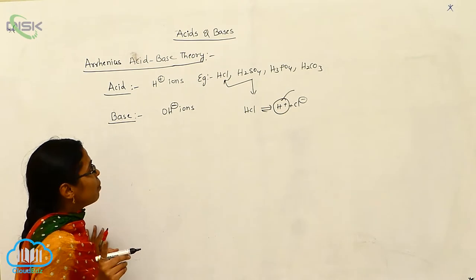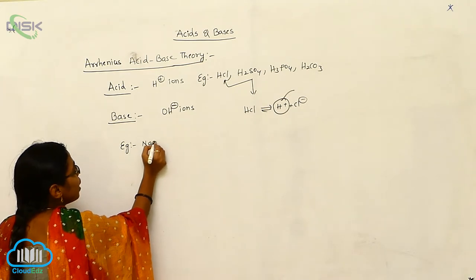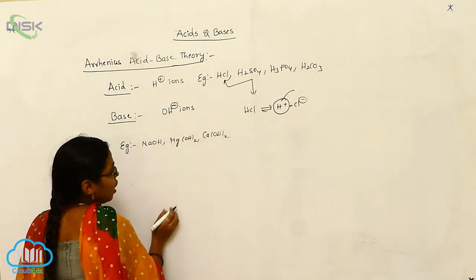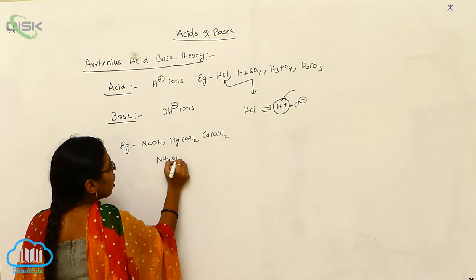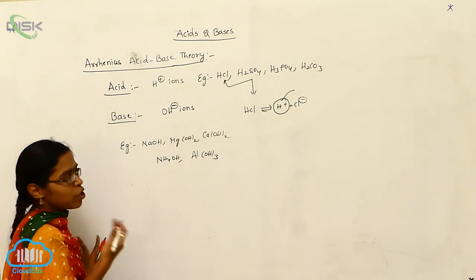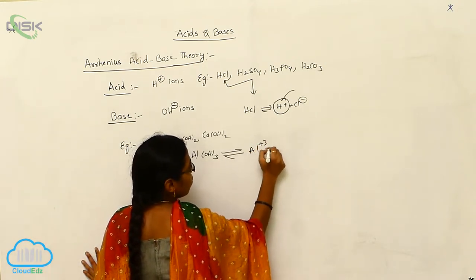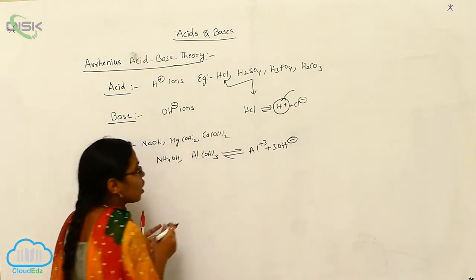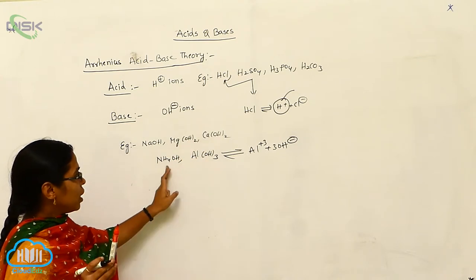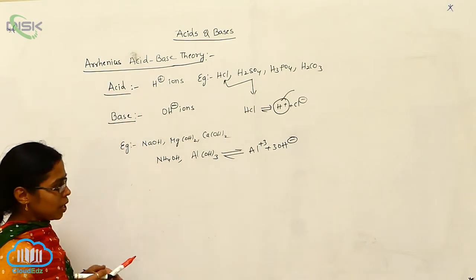Bases give OH⁻ ions. Examples are sodium hydroxide, magnesium hydroxide, calcium hydroxide, ammonium hydroxide, and aluminum hydroxide — all give OH⁻ ions on dissolving in water. For example, aluminum hydroxide on dissolving in water gives Al³⁺ and 3 OH⁻ ions. This is the Arrhenius acid-base theory.